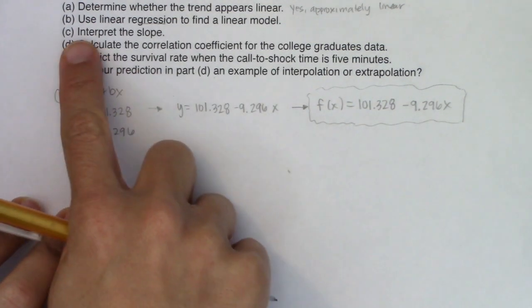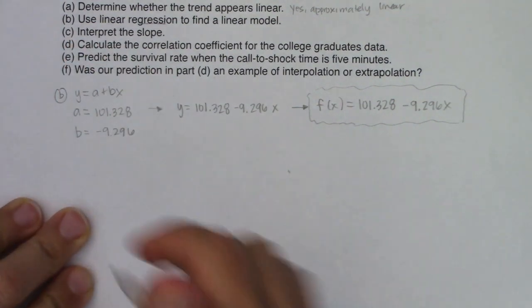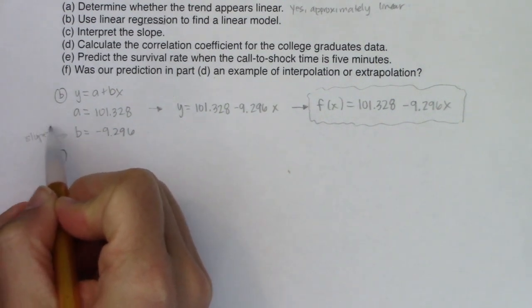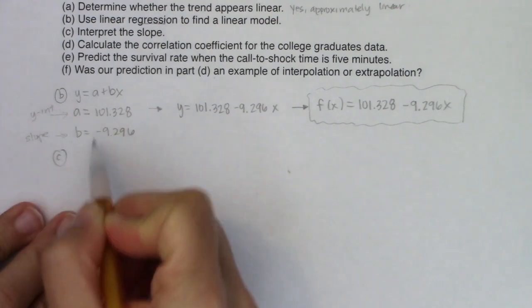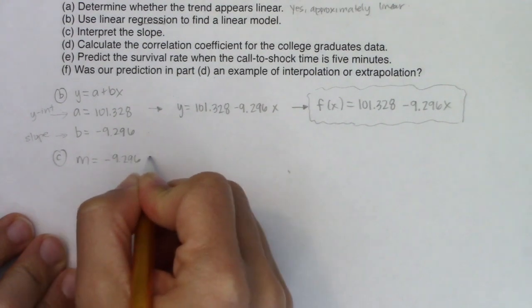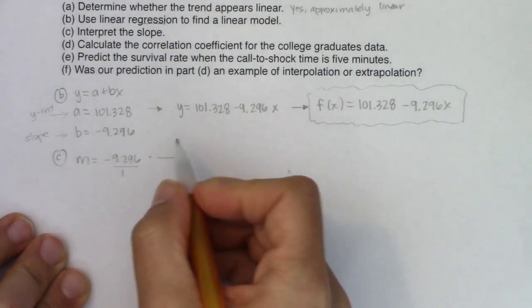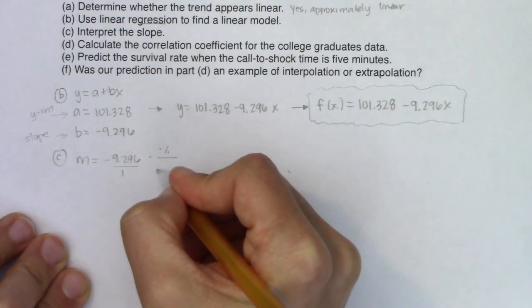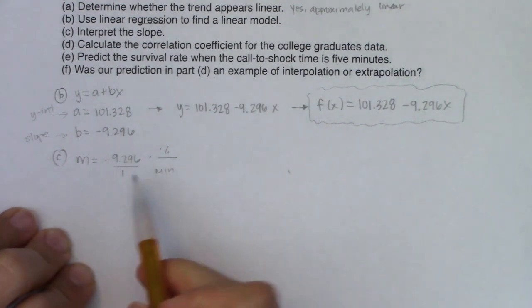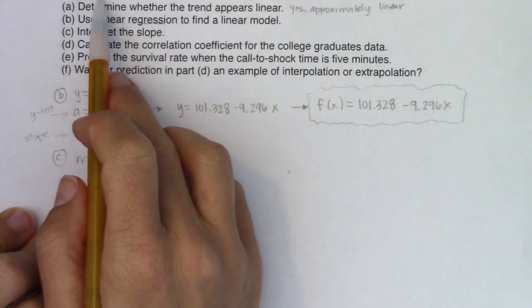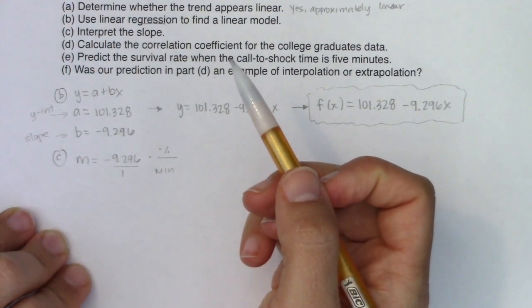So you've got the correct slope and y-intercept. You're writing it in the form a plus bx and you have function notation. The next question, of course, it's going to be a sentence, interpret the slope. So here we go. My slope is always b. So this is always your slope. This is always your y-intercept. So I want to interpret this slope of negative 9.296. Now the units on this, if I was going to make this a unit ratio, the y units were percents and the x units were minutes. So I'm seeing that for every one minute, what is this 9.296 percent representing? Well, your survival rate is decreasing by about 9.296 percent.